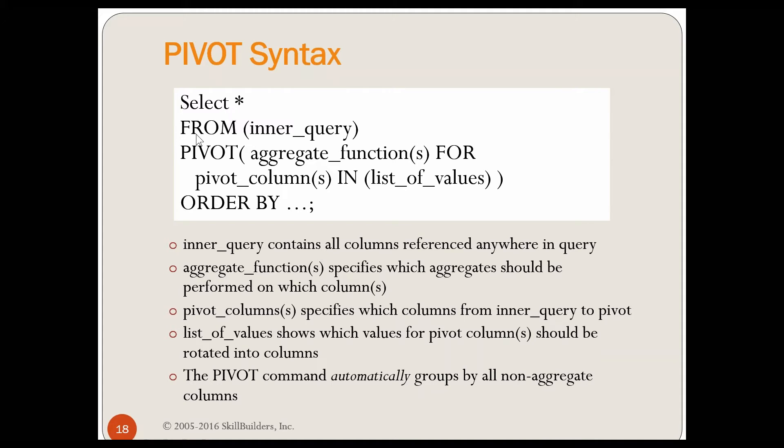Let's look at the syntax. You say select star from, and now you have an inner query. So I'm going to do a select star from, and I'm going to do a query within my from clause. What is that inner query? The inner query is going to contain all the columns that you need that you're using in this query, whether it's in the pivot command, whether it's in the pivot columns, or whether you just want to display other columns along with that data. Then you have a pivot command with your open paren and close paren at the end. Within the pivot command, you're going to have one or more aggregate functions.